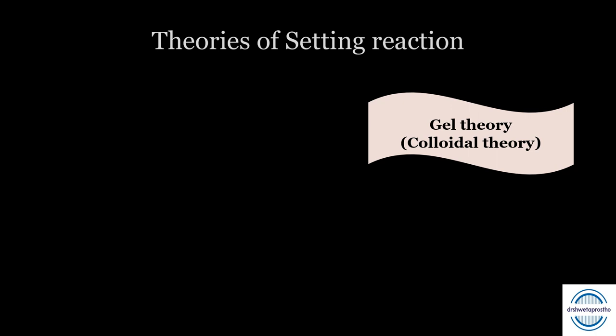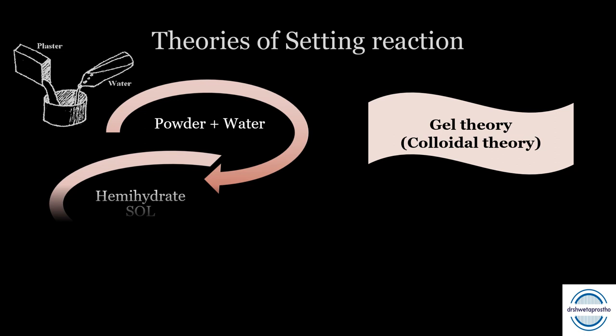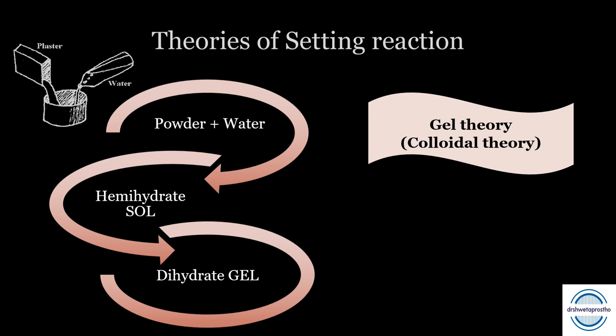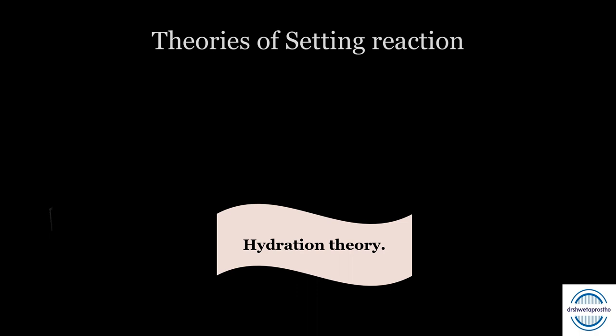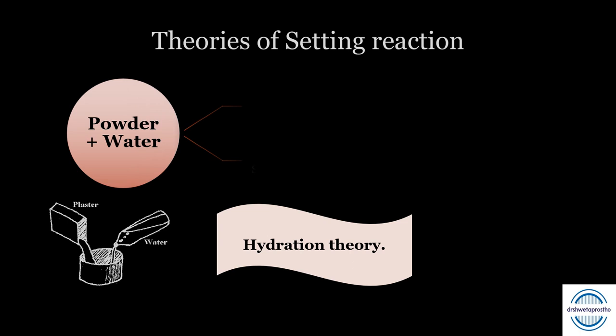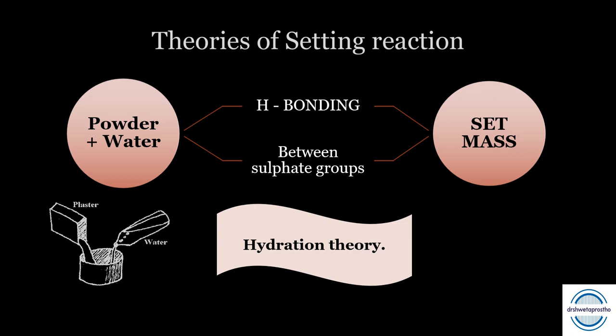The gel theory (colloidal theory) proposes that when powder is mixed with water it forms a hemihydrate sol, then a dihydrate sol, and finally a dihydrate gel as the set mass. However, the set mass did not appear like a gel, so this theory was discarded. The hydration theory states that when hemihydrate is mixed with water it rehydrates the particles, hydrogen bonding occurs between sulfate groups, and a hard set mass forms — but this theory was also not accepted.